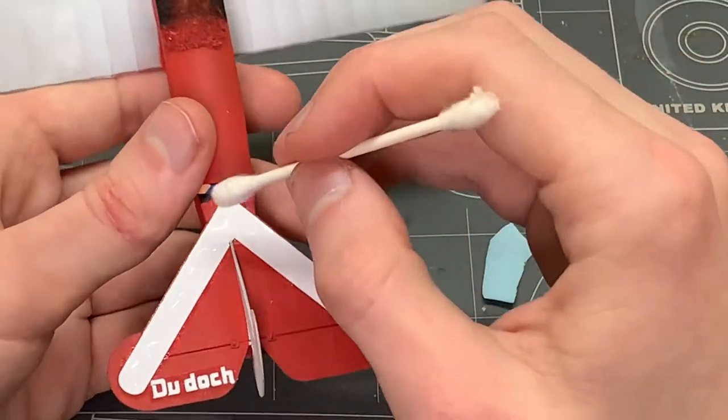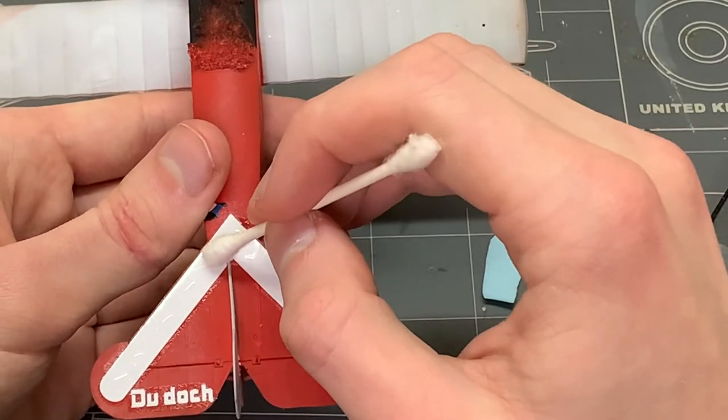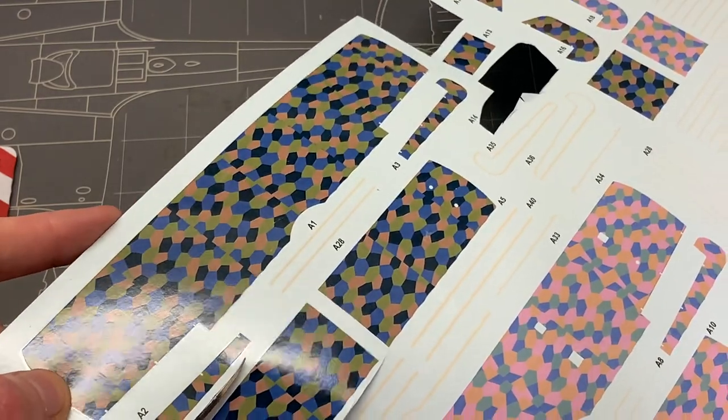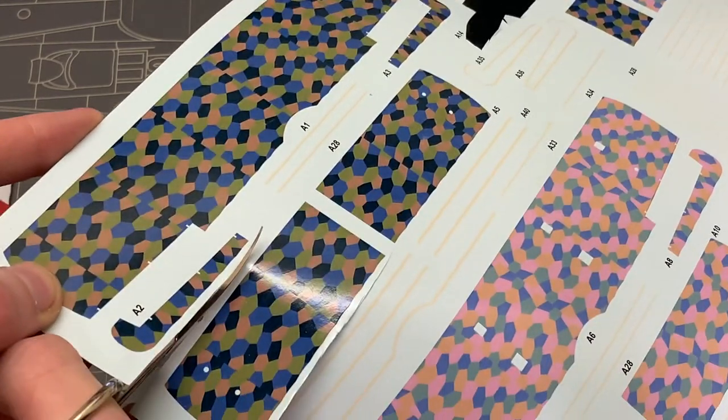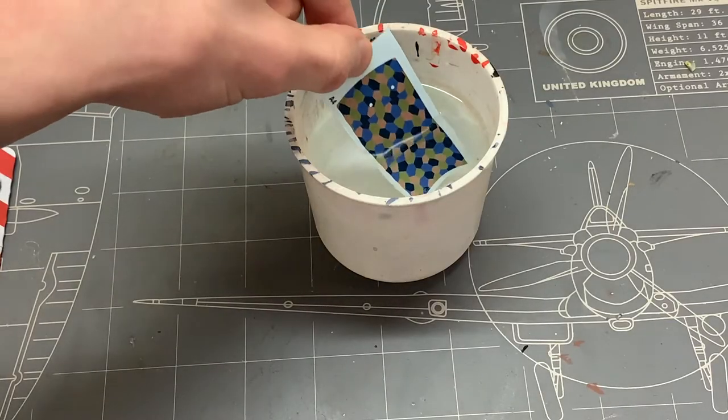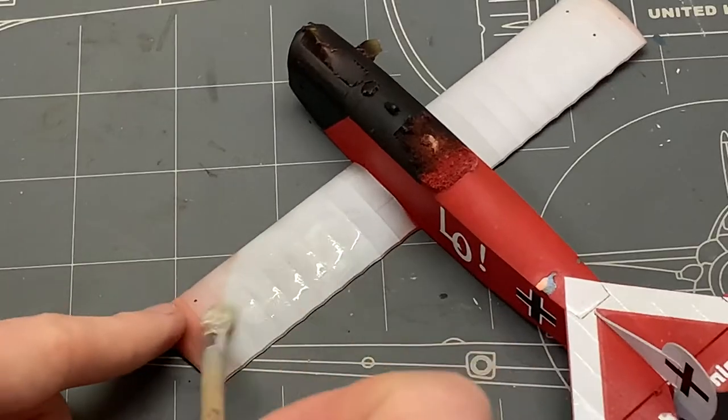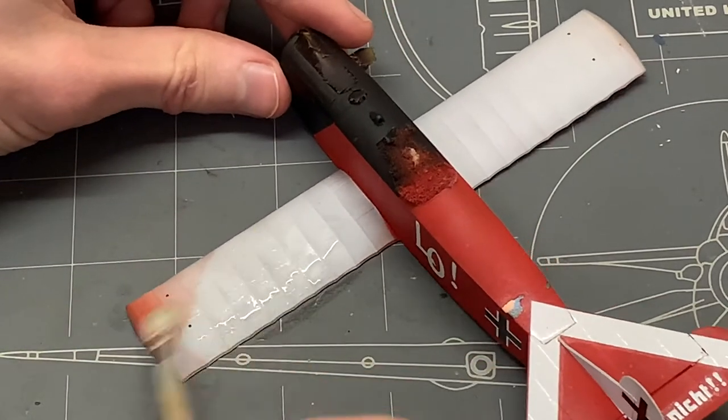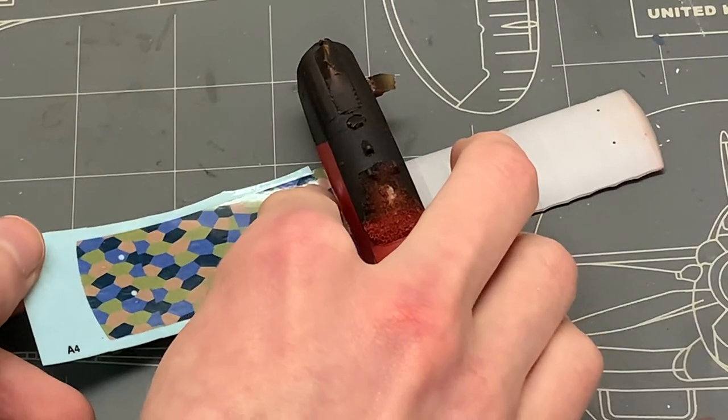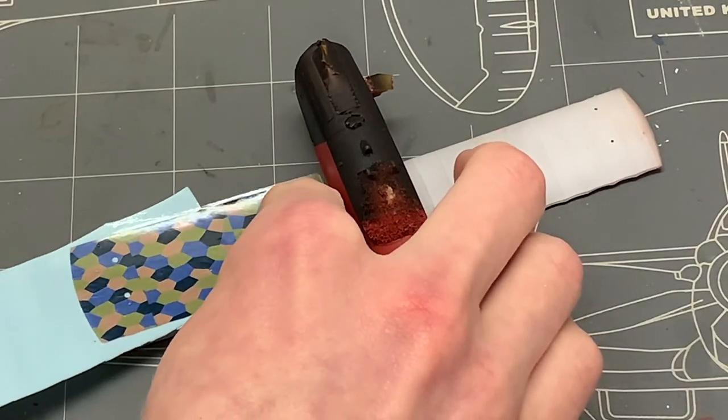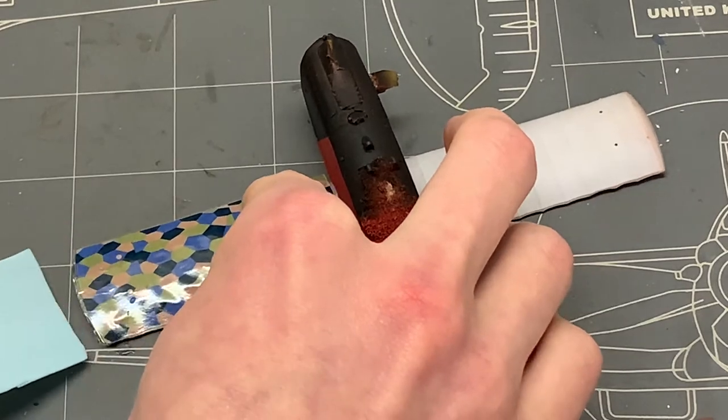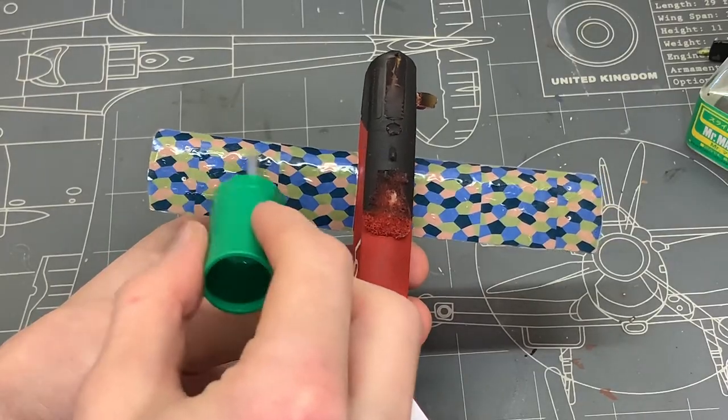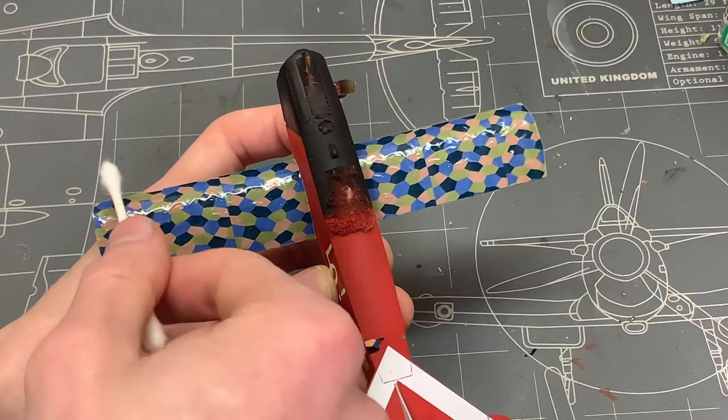After all of that was done, it was time to move on to the lozenge decals. Those can be pretty intimidating at first because they're big and they have to go in a very specific position. They're also quite finicky and can easily tear if you don't handle them correctly. One cool trick to get them easily sitting where you want them is to always keep the surface wet. That way you can manipulate them for a longer amount of time before they actually start setting onto the plastic. Then only when they're in the correct position can we start applying the decal solutions to set them in place.